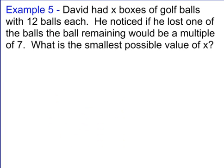This is an example that we can use that will allow us to write an equation to solve this problem. David has x boxes of golf balls with 12 balls each. He noticed that if he lost one of the balls, the balls remaining would be a multiple of 7. What is the smallest possible value of x? Well, we know that he has this many golf balls, 12x. Okay, and if he loses one, so if we subtract one away from that, we know the balls remaining would be a multiple of 7. So we know this would be equivalent to 0 mod 7. Okay, because 0 mod 7 is when you have a multiple of 7.